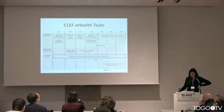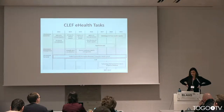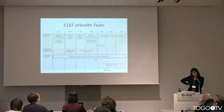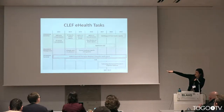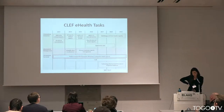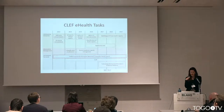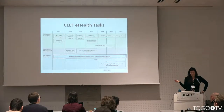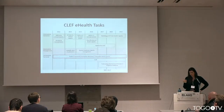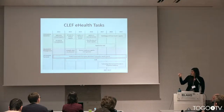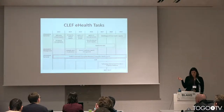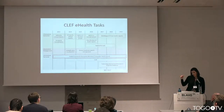We started in 2013 with three tasks: named entity recognition in clinical reports, acronym normalization, and patient-centered information retrieval — or consumer health search. After that, people came in and left, we had new tasks every year, and some have been running for several years in a row. We divided them into three categories: information extraction, information management, and information retrieval.